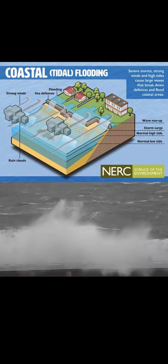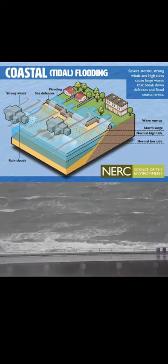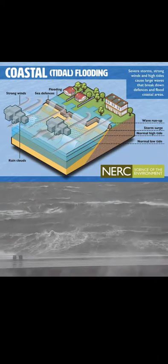And finally, number four: coastal or tidal flooding. Coastal flooding refers to flooding that occurs along the coastline due to the rise in sea level, storm surges, or a combination of both. It can happen during high tide and is often caused by severe weather conditions such as tropical storms and hurricanes.